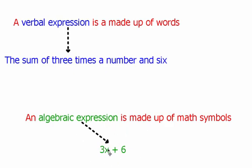We've got 3x plus 6. Now these two expressions mean the exact same thing. 'The sum of 3 times a number and 6' and '3x plus 6' are identical — they are equal to each other. They are two different ways of writing the same thing. And what we're going to be learning about in this video is how to convert between the two.